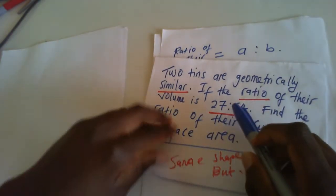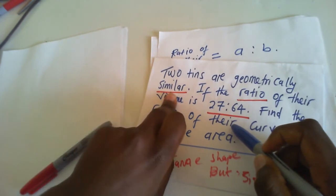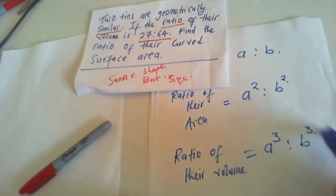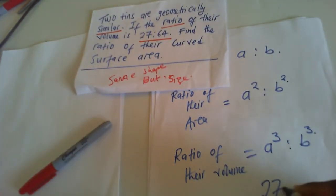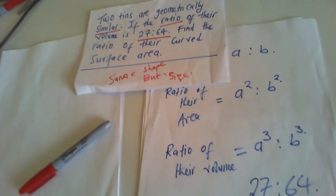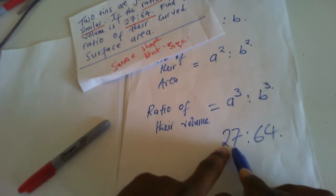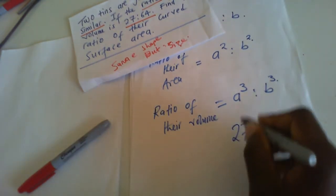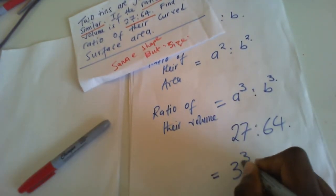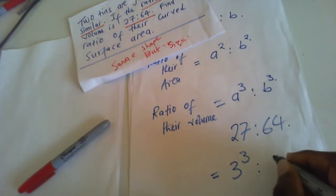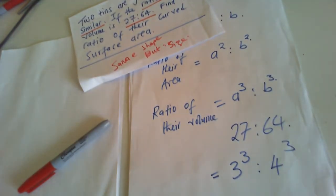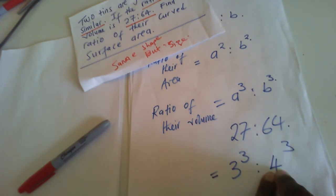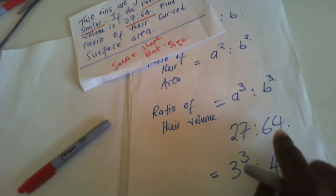The question says these two things are similar and the ratio of their volume is 27 to 64. Our main aim is to express 27 and 64 in the form A cubed and B cubed. We know that 27 equals 3 cubed, since 3 × 3 × 3 = 27, and 64 equals 4 cubed, since 4 × 4 = 16 and 16 × 4 = 64.